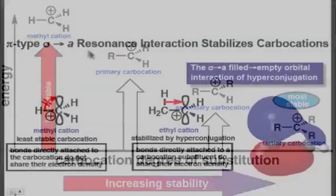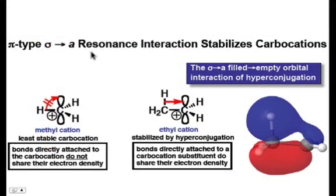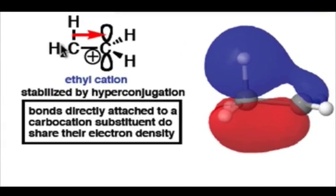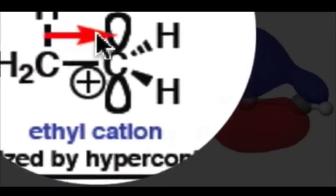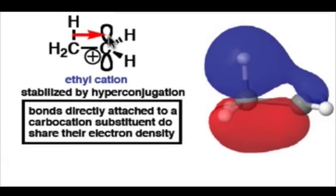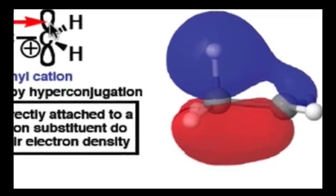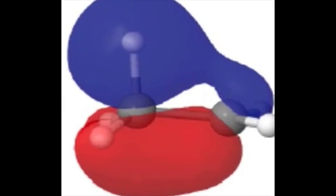But why is this the case? This comes back to our orbitals. There is a pi-type sigma-to-pi resonance interaction that helps stabilize these carbocations. When there's an adjacent carbon with a hydrogen attached, the sigma bond between carbon and hydrogen can donate in a pi-type fashion into that empty p orbital. This sigma-to-pi interaction is known as hyperconjugation.